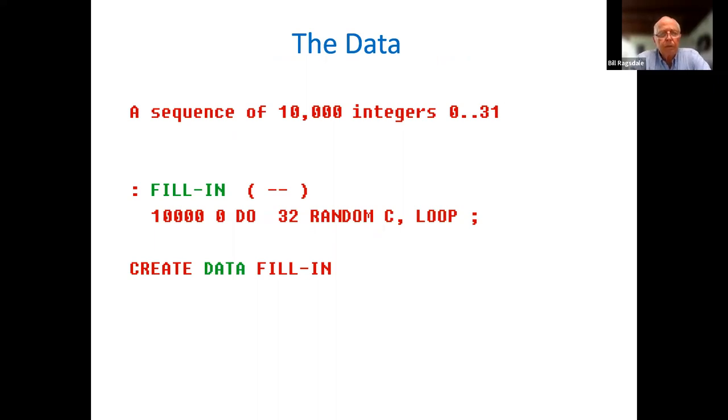So let's look at the data. I needed a sequence of 10,000 integers, zero to 31. And the word FILL-IN does that. It does a DO loop from zero to 10,000. It will give me the 10,000 random numbers. And I create an array by going 32 RANDOM, which generates the random number from zero to 31. C comma puts that into a byte format and repeats this 10,000 times. So you can imagine a little C comma going along, every time writing a new random byte into memory building my array. The word at the bottom CREATE DATA gives me a named array area in memory and then FILL-IN adds the 10,000 items.